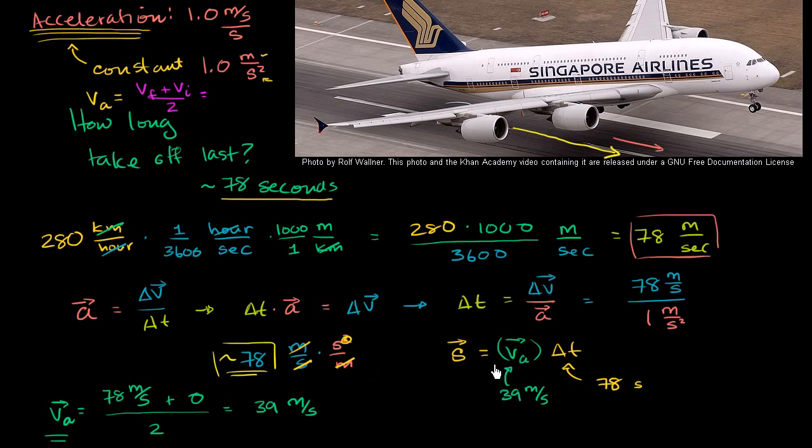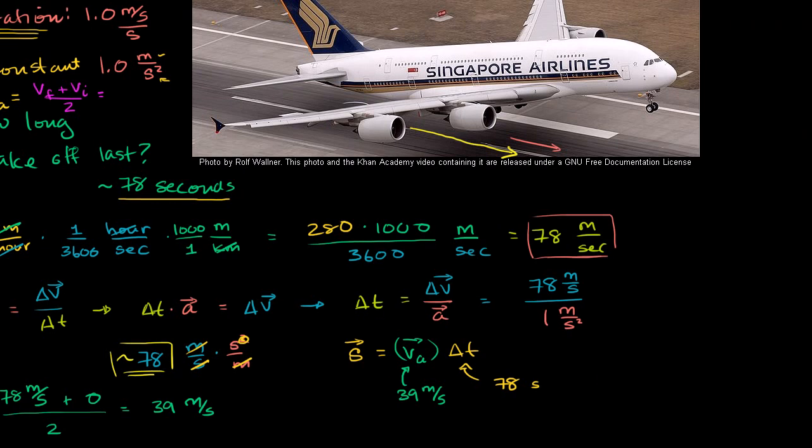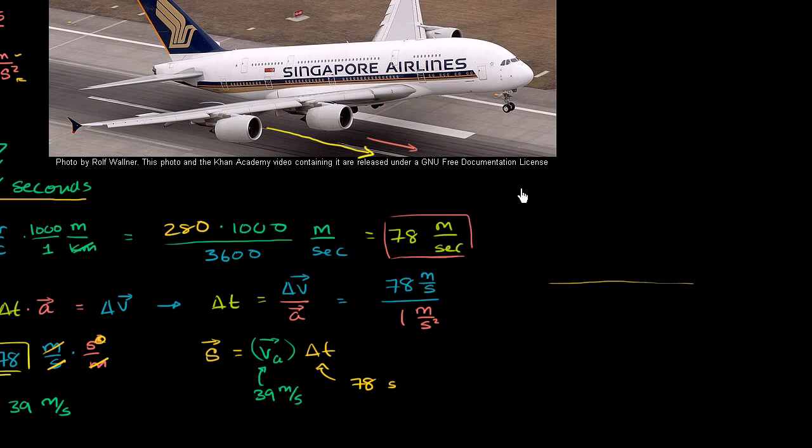Another way to think about it, if you want to think about the distance traveled, this plane is constantly accelerating. So let me draw a little graph here. This plane's velocity-time graph would look something like this. So if this is time and this is velocity right over here, this plane has a constant acceleration, starting with 0 velocity. This slope right here is its constant acceleration. It should actually be a slope of 1, given the numbers in this example. And the distance traveled is the area under this curve up to 78 seconds, because that's how long it takes for it to take off. So the distance traveled is this area right over here, which we covered in another video.